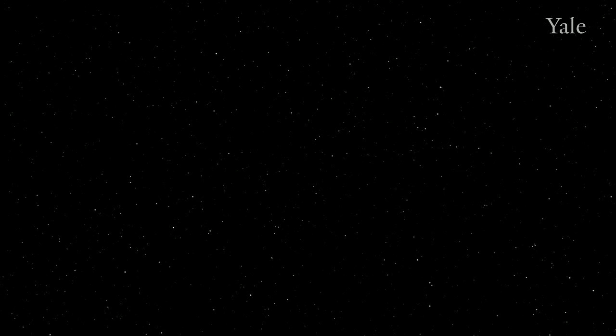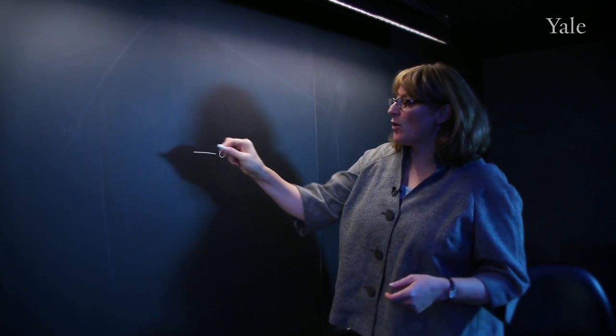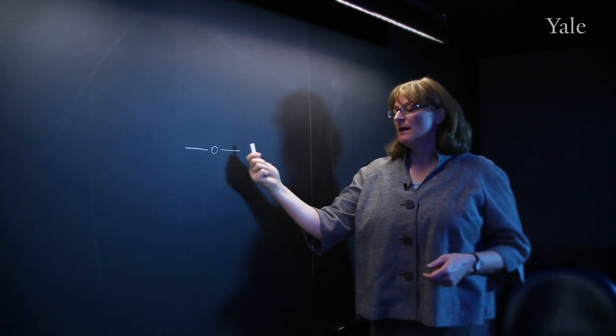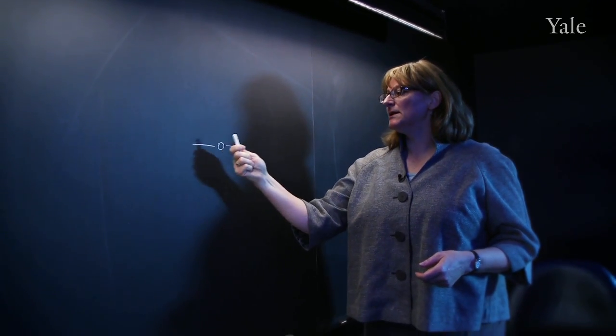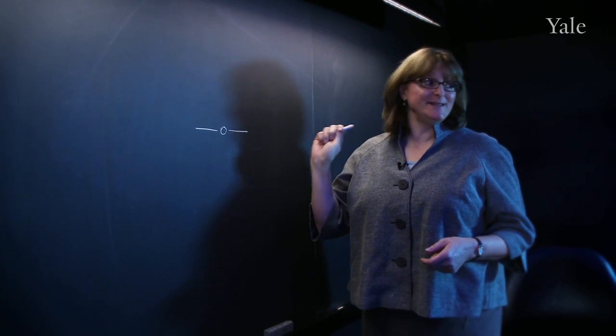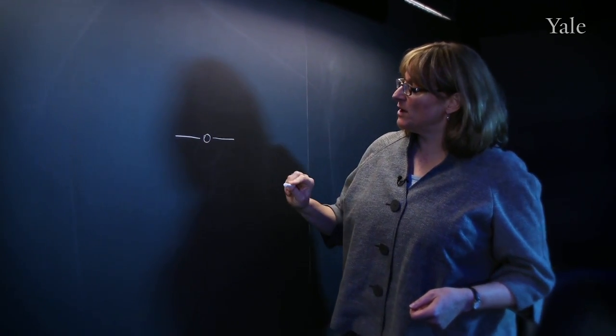Material falling onto the black hole forms a disk. So it's orbiting the black hole in a disk, and it needs to slowly lose energy. Physics students will know it needs to lose angular momentum before it can fall in.